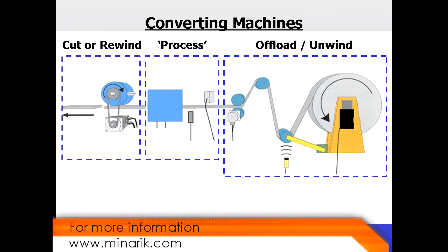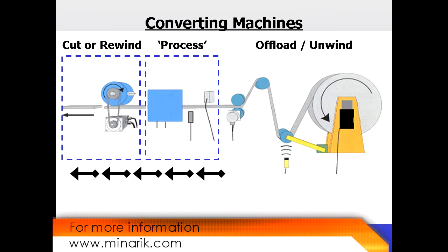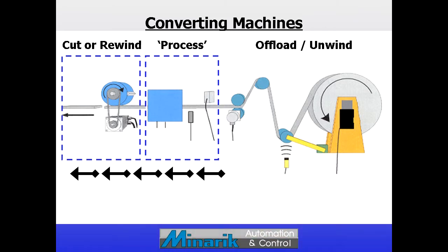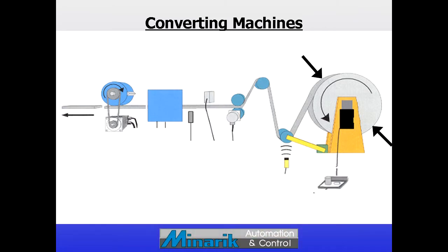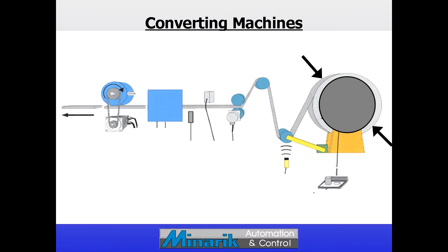Many times the process requires that the material downstream will need to start, stop, and hold position momentarily. But starting and stopping a large roll of material with high inertia isn't practical, and as the roll gets smaller, the amount of material being offloaded decreases. So the speed of an offload roll must increase gradually as the roll empties.